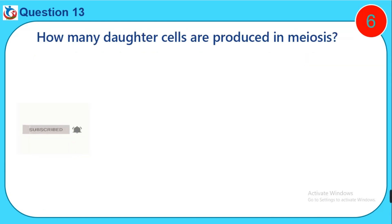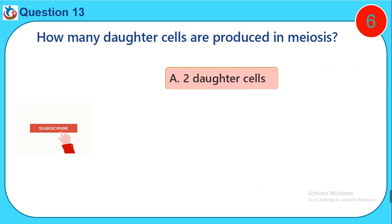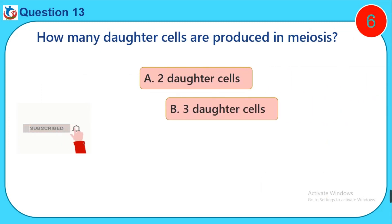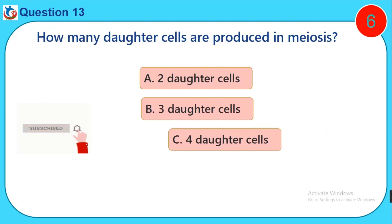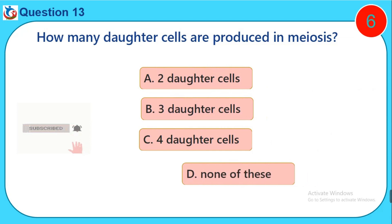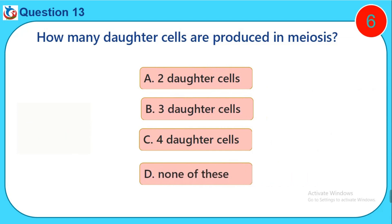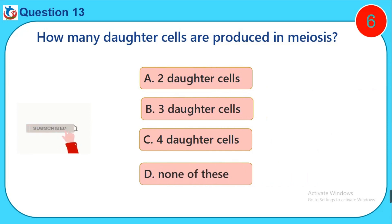Question thirteen: How many daughter cells are produced in meiosis? A) Two daughter cells, B) Three daughter cells, C) Four daughter cells, D) None of these.